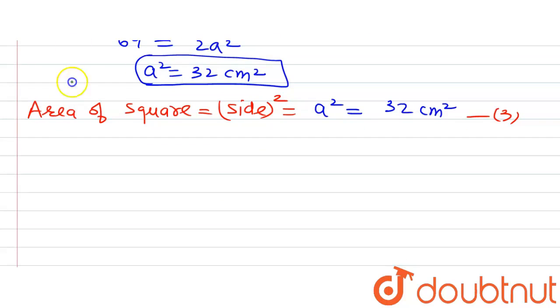So we can write down that area of shaded region equals area of circle, that is 16π, minus area of square, that is 32 cm². That's all, thank you.